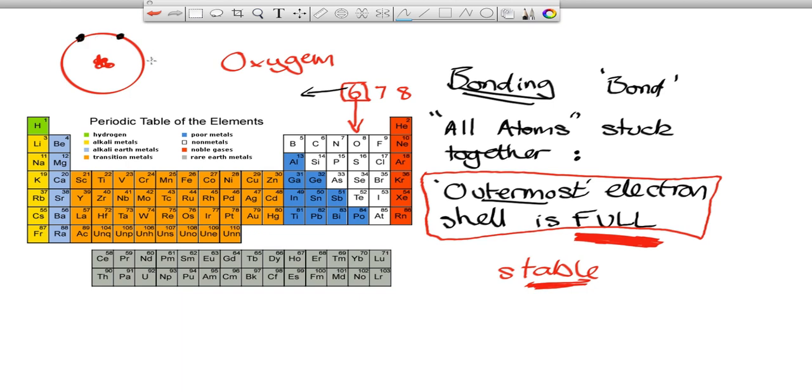And every time we've ever seen oxygen react and join onto another atom, these six electrons suddenly become eight. So it kind of drafts in a couple of extra electrons from somewhere. Where are they coming from? I don't know.